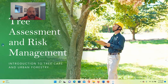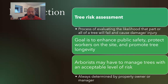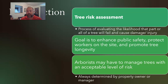Hello everybody. We're talking about tree assessment and risk management today. When we're talking about tree risk assessment, we're describing a process of evaluating the likelihood that part or all of a tree will fail and cause damage or injury. That second part is really important — if there's no way it's going to cause damage or injury, then there's no risk and it's not something we're worried about.